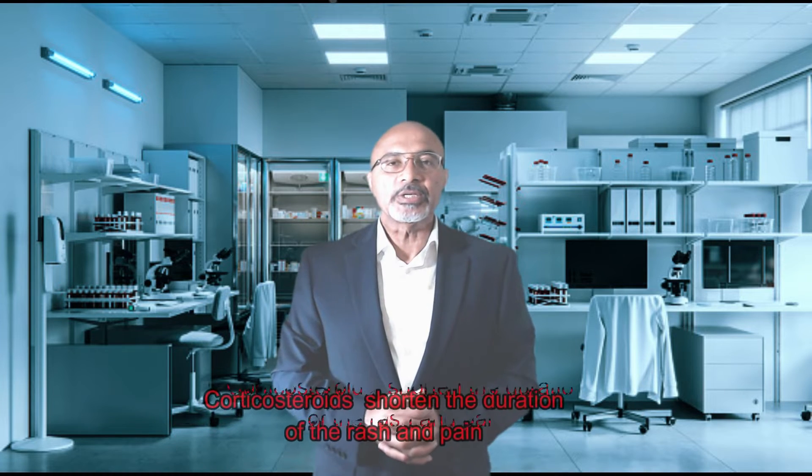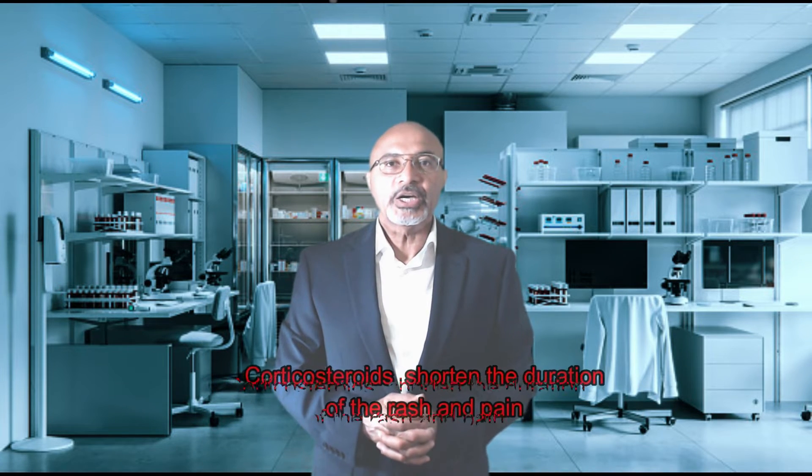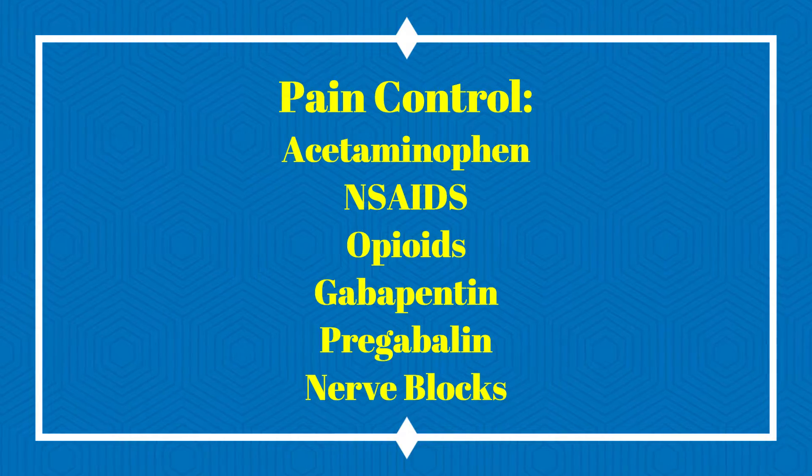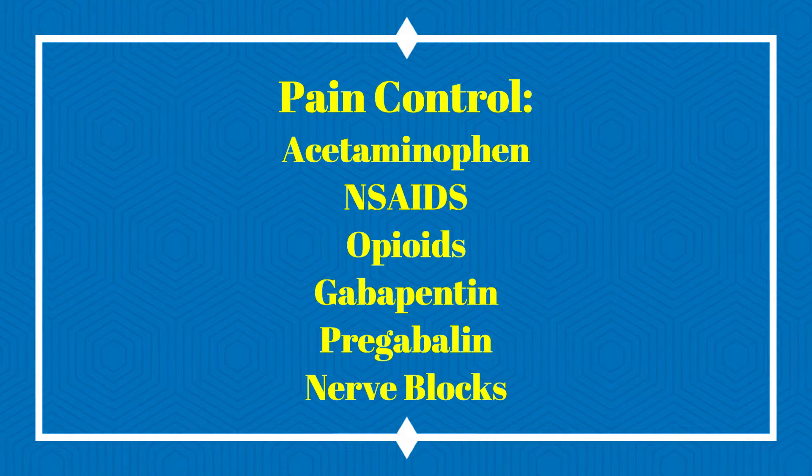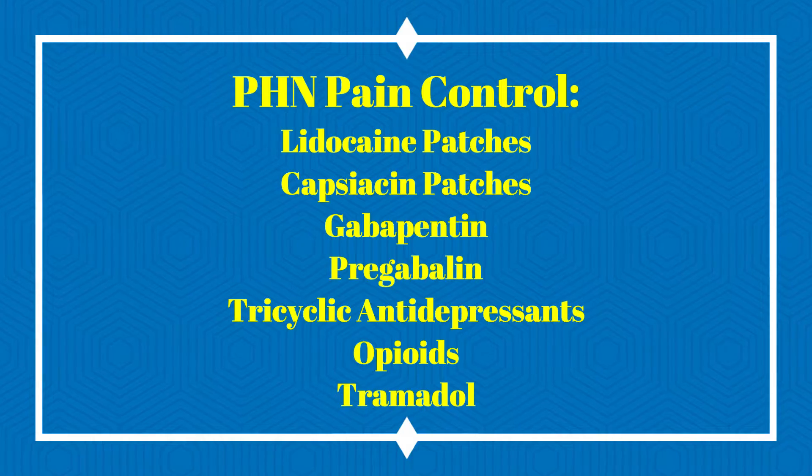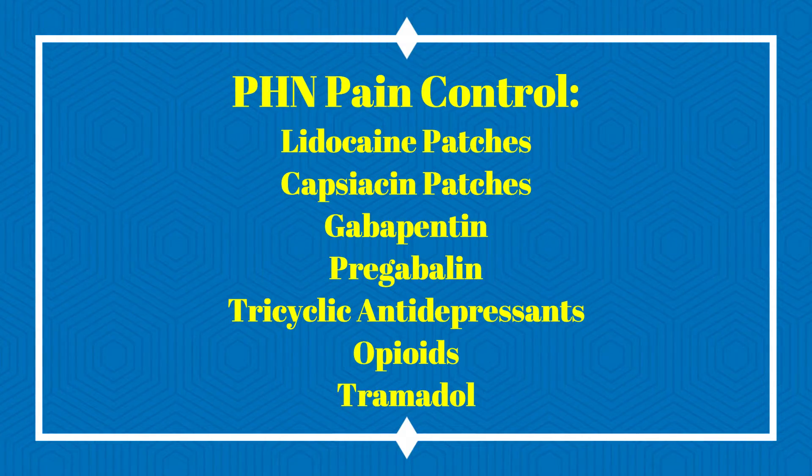Corticosteroids can help to decrease the duration of the rash and the pain. We can treat mild pain with acetaminophen or non-steroidal anti-inflammatories, and more severe pain can be treated with opioids, gabapentin, pregabalin, or nerve blocks. The pain of post-herpetic neuralgia can be controlled with lidocaine patches, capsaicin patches, gabapentin, pregabalin, opioids, and tramadol.